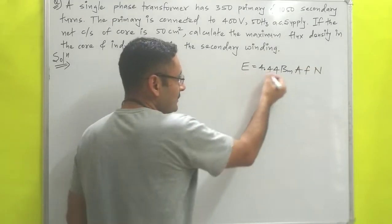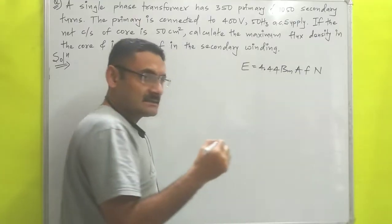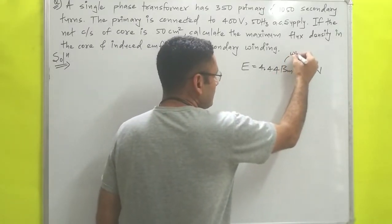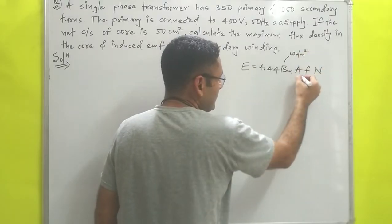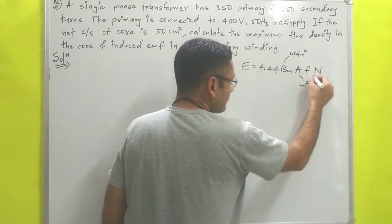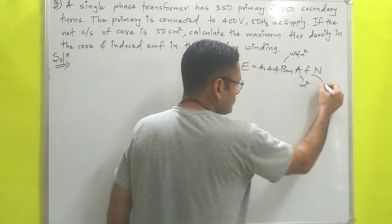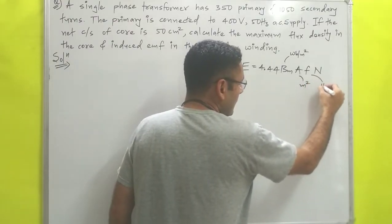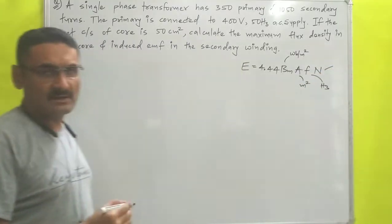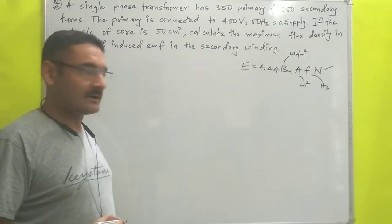In which E is the EMF, Bm is the maximum flux density in weber per meter square, A is the cross section area of the core in meter square, f is the frequency of the source in hertz, and N is the number of turns in the primary coil or secondary coil.